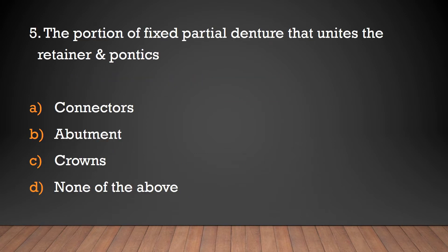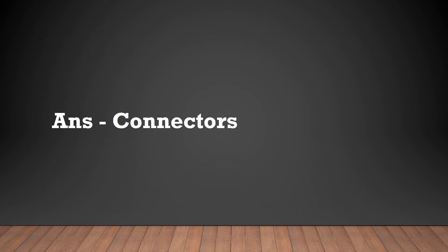The portion of a fixed partial denture that unites the retainer and pontic is called: connectors, abutment, crowns, or none of the above? The answer is connectors. Connectors unite the retainer and pontics.